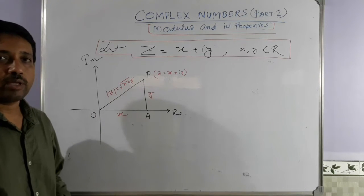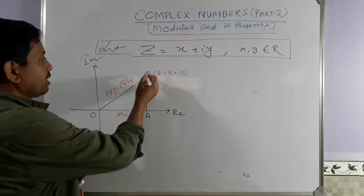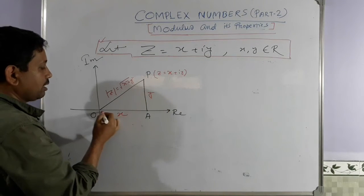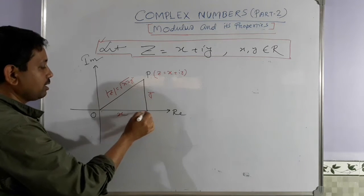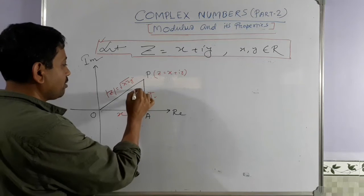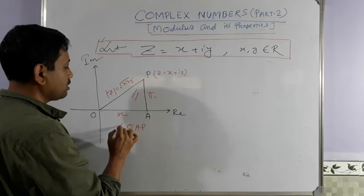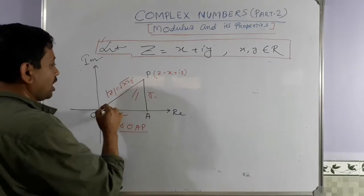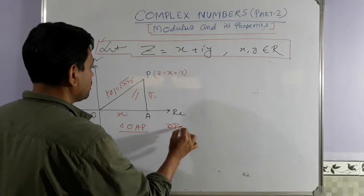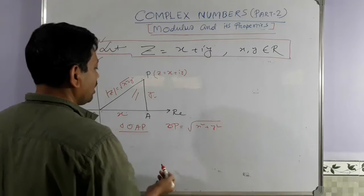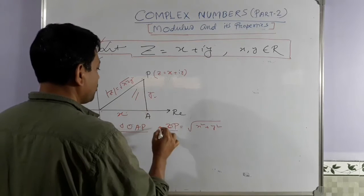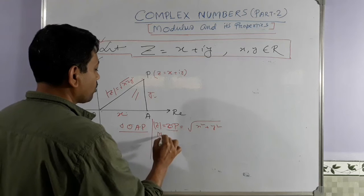Now we talk about the modulus of a complex number. If you consider a point P on the Argand plane, P = x + iy, then the distance OP equals √(x² + y²). This distance OP is normally denoted as the modulus of z, written as |z|. This is known as the modulus of z.